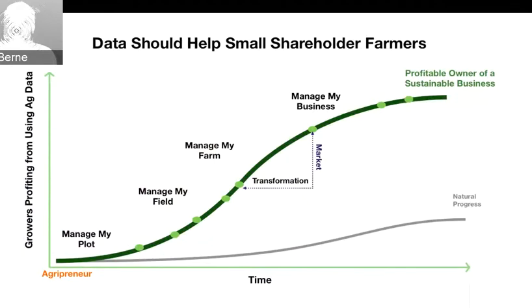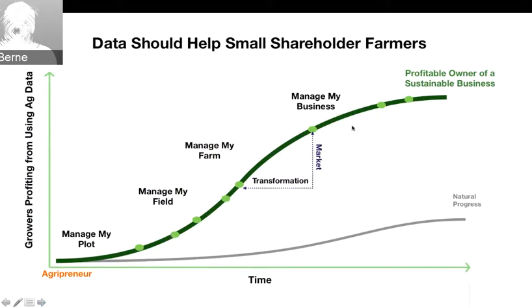One of the issues that came up when we were in South Africa is that it's hard to get good market data that you can trust. The goal is to review results and improve for the next cycle, and improve traceability as discussed. We really should help you as a smallholder farmer move from just managing your plot to managing your farm, managing your business, and being a profitable owner of a sustainable business — that's the end result we're aiming for.